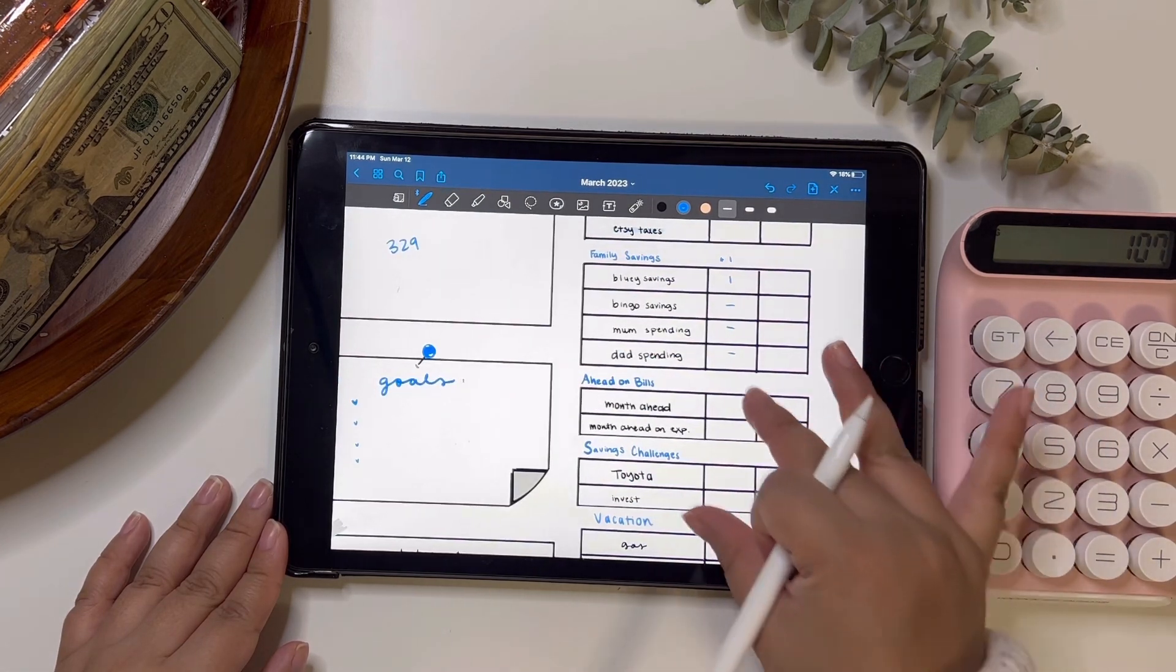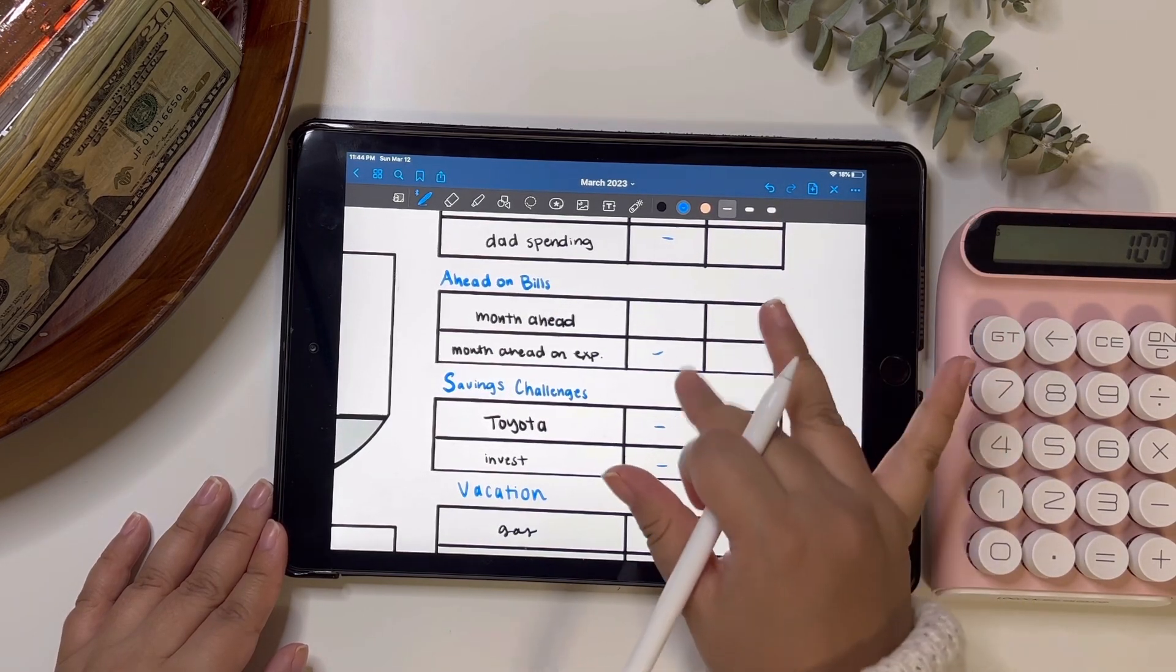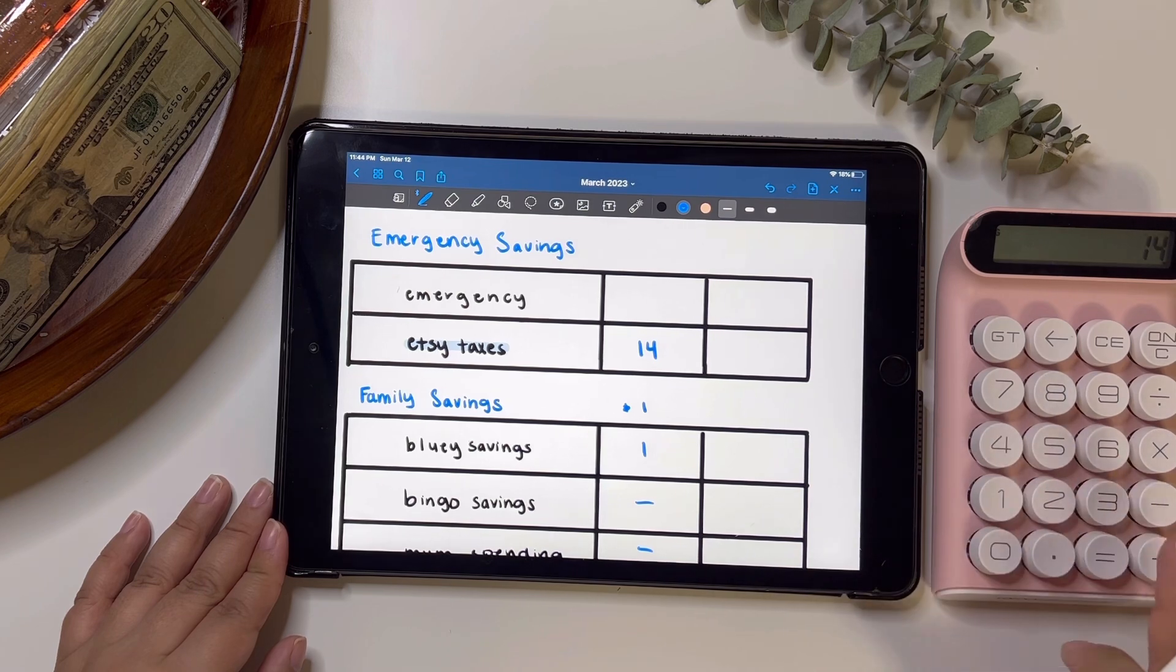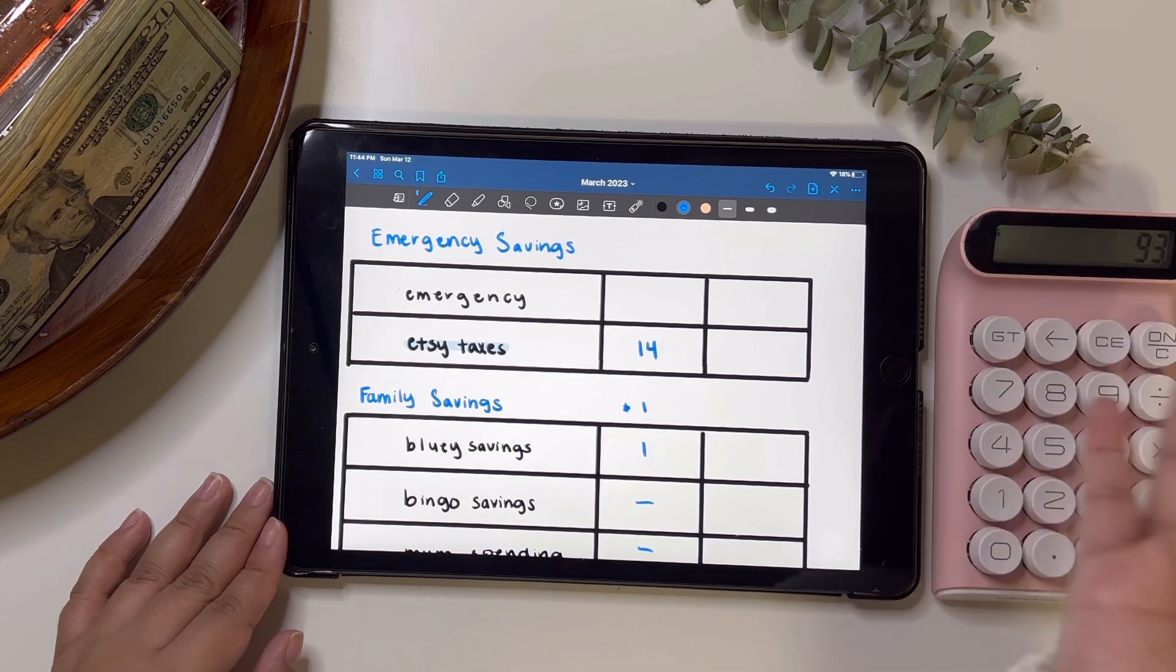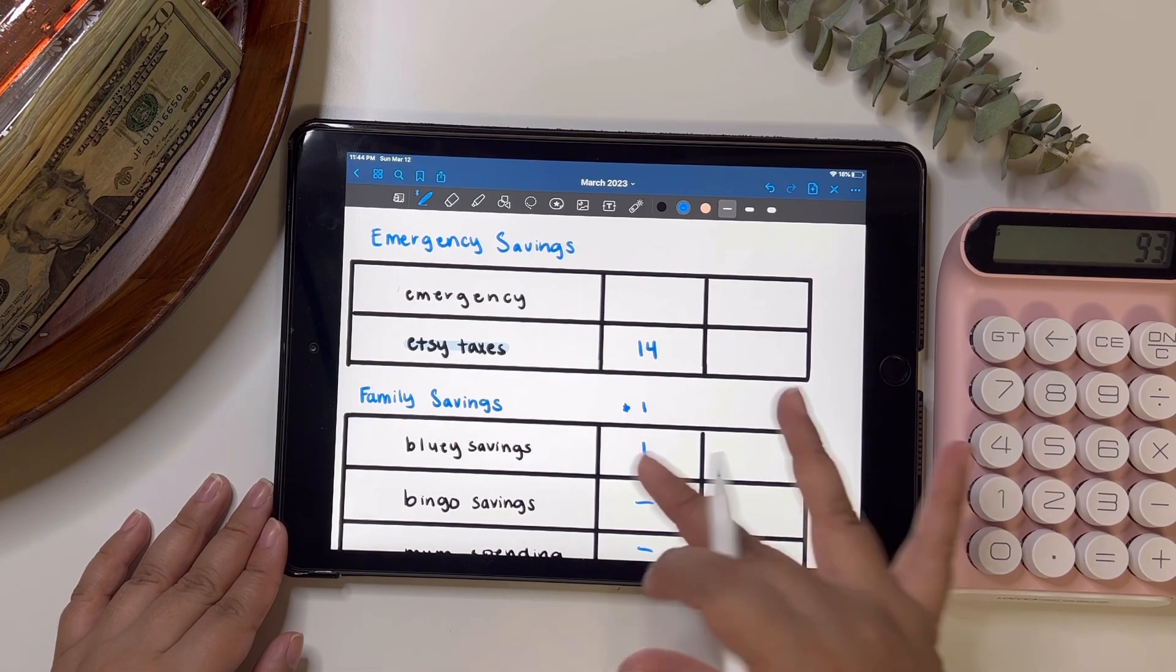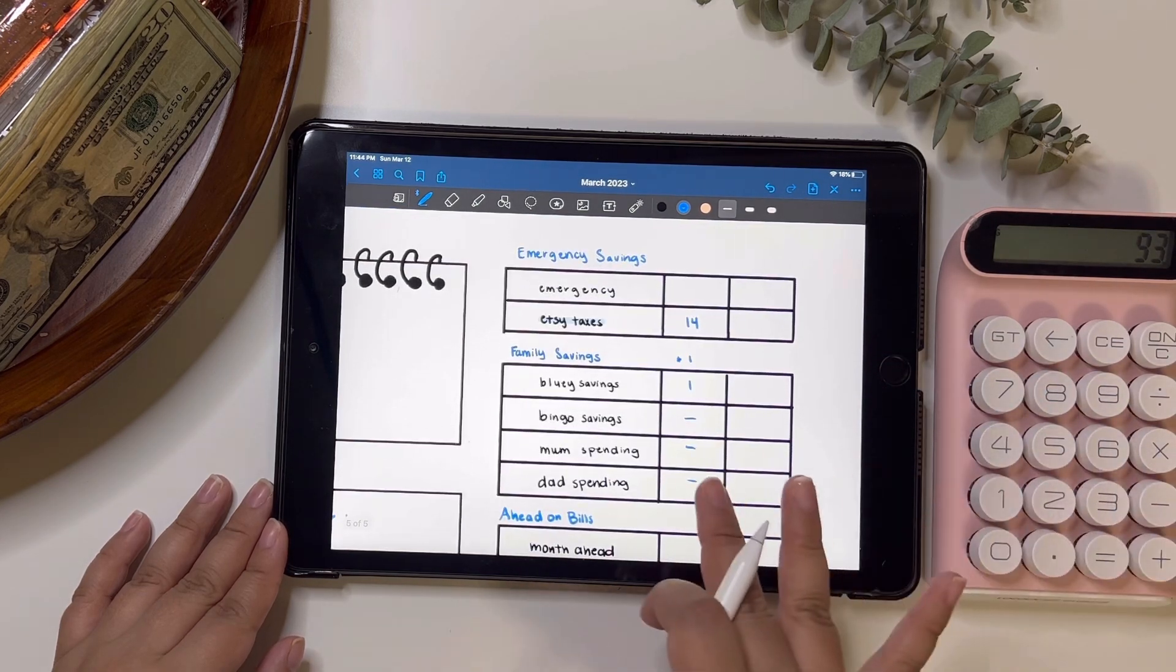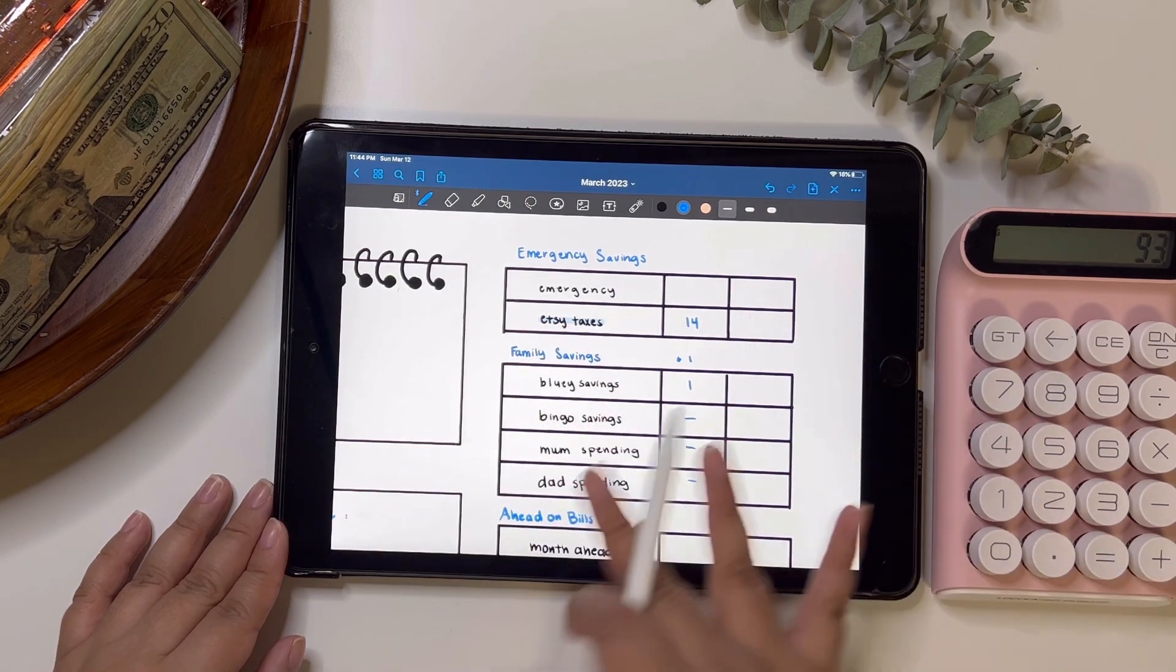And then yeah, I know that Toyota invest and this one is not going to be getting anything. And then Etsy taxes is going to be getting $14, which is super exciting because that means I've been making sales. So I'm really happy about that, like bittersweet that it's going to taxes, but hopefully at the end, I won't have to pay it. So then it'll be like a little tax return for me. So Etsy taxes gets $14 and then we are left with $93, which is awesome because these past weeks we have not been left with anything. I haven't even been able to stuff any of these.